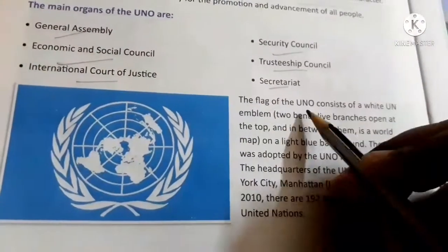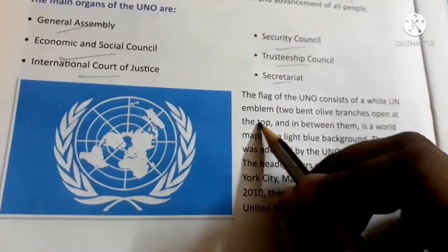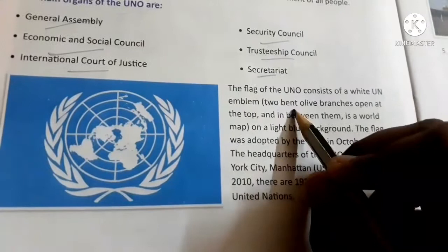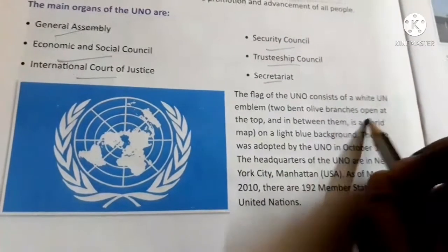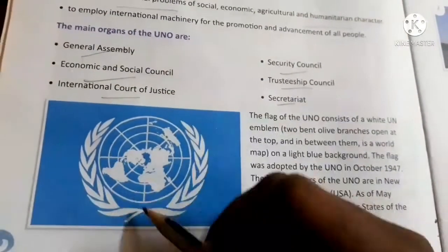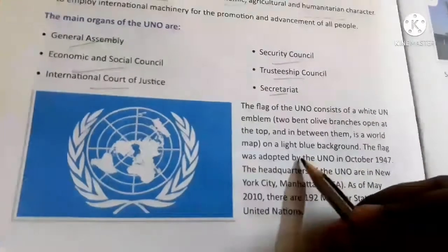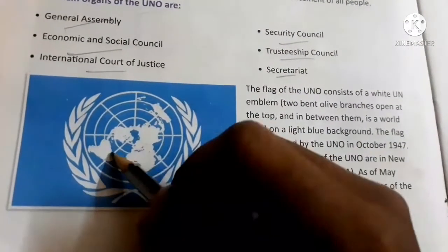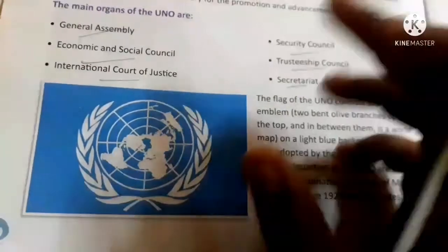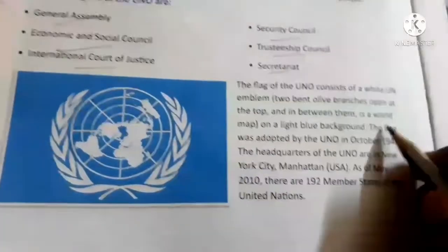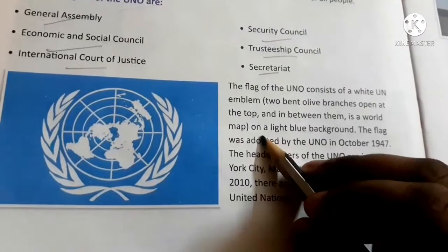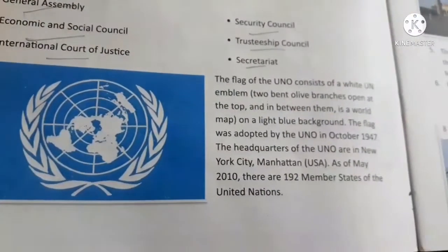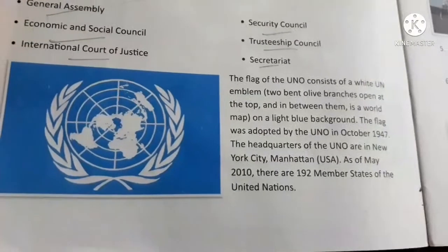Every organization has a flag, and the UN also has one. The flag of the UN consists of a white UN emblem with two bent olive branches open at the top, and a world map on a light blue background. The flag was adopted by the UN in October 1947.